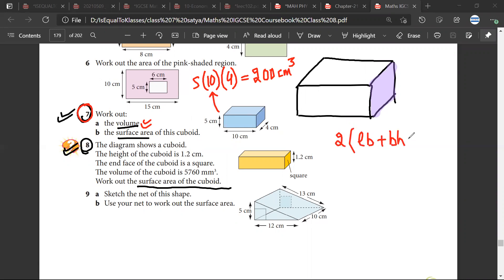So we have to find the, we have to do length into breadth which would be 10 into 4, plus 10 into 5. Okay, so let's tell the answer. I'm not able to... yeah what would be the answer? 220 centimeters square. Okay.